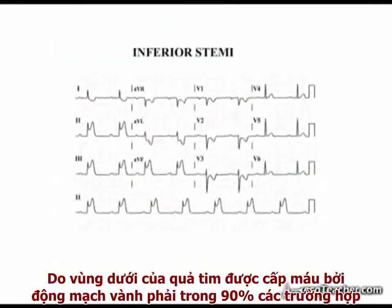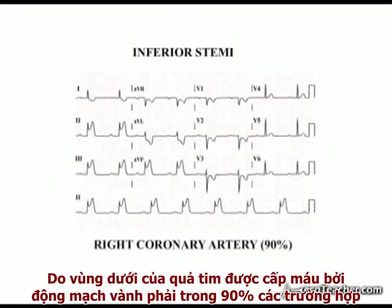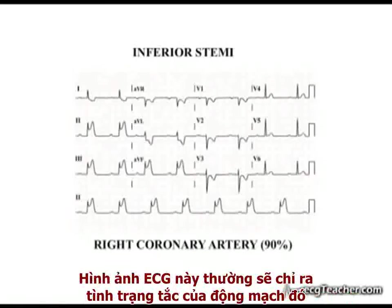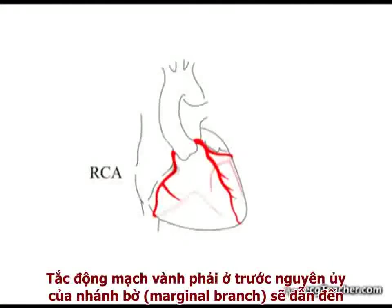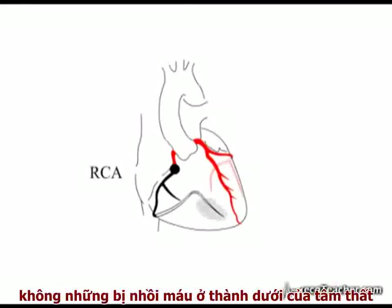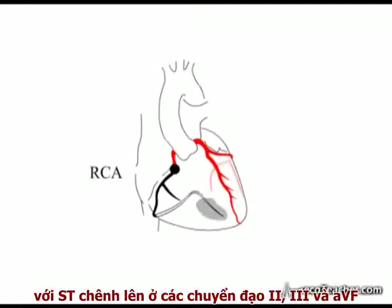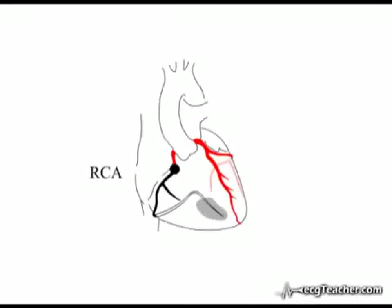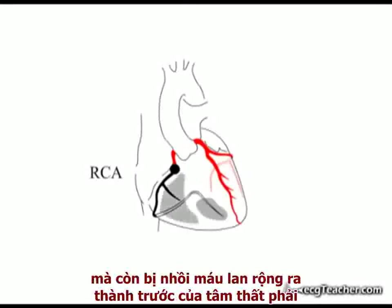As the inferior surface of the heart is supplied by the RCA in 90% of people, this ECG pattern usually indicates obstruction of that artery. Blockage of the right coronary artery proximal to the origin of the marginal branch will result not only in infarction of the inferior surface of the ventricles, with ST elevation in leads 2, 3, and AVF, but also in extensive infarction of the anterior wall of the right ventricle.